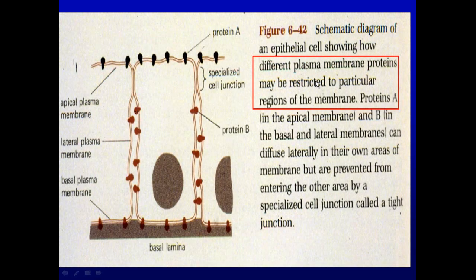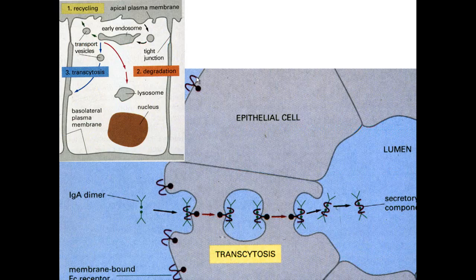Not only do tight junctions restrict passage between cells, but they also keep the proteins in the apical border separate from those at the basolateral border, by means of these tight junctions that occur here.